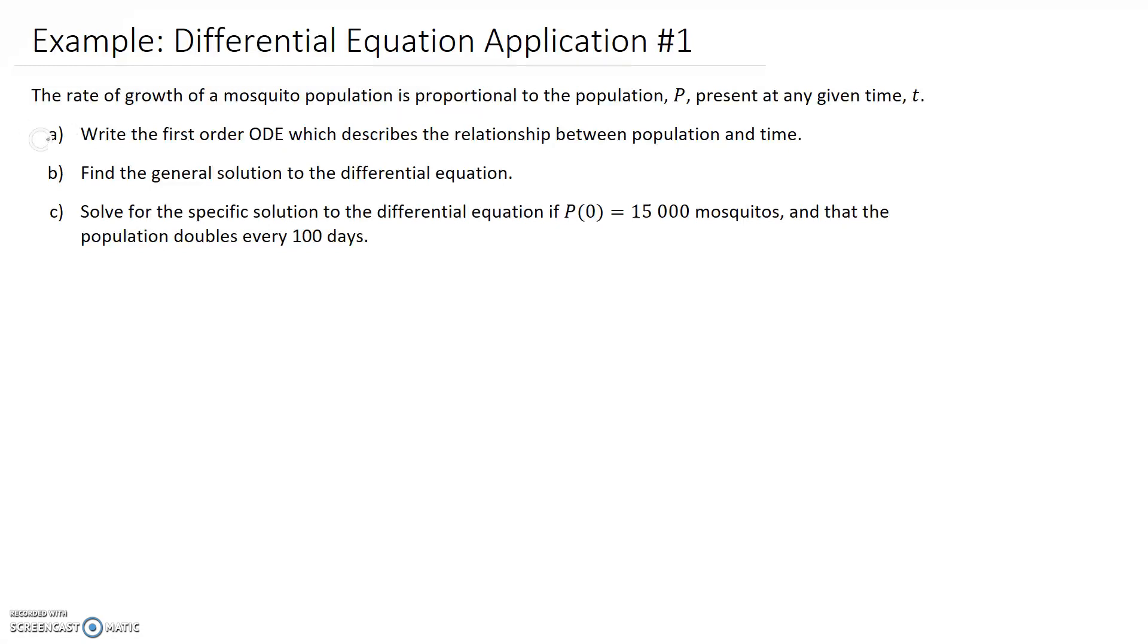The first step is to write this as a first order ordinary differential equation (ODE) that describes the relationship between population and time.